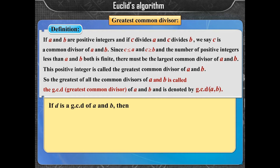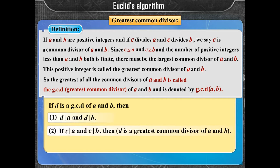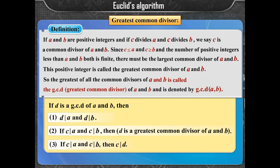If D is the GCD of A and B, then: (1) D divides A and D divides B. (2) If C divides A and C divides B, then C is less than or equal to D. (3) If C divides A and C divides B, then C divides D.